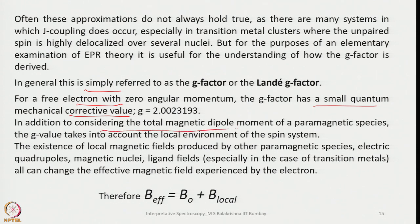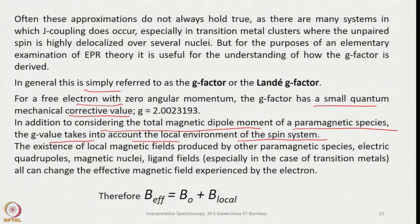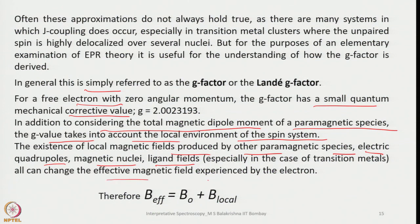The G value takes into account the local environment of the spin system. The net magnetic field experienced by an electron is affected by local fields from electric quadrupoles, magnetic nuclei, and ligand fields — especially relevant for paramagnetic transition metal complexes. This is analogous to shielding and deshielding effects in NMR.